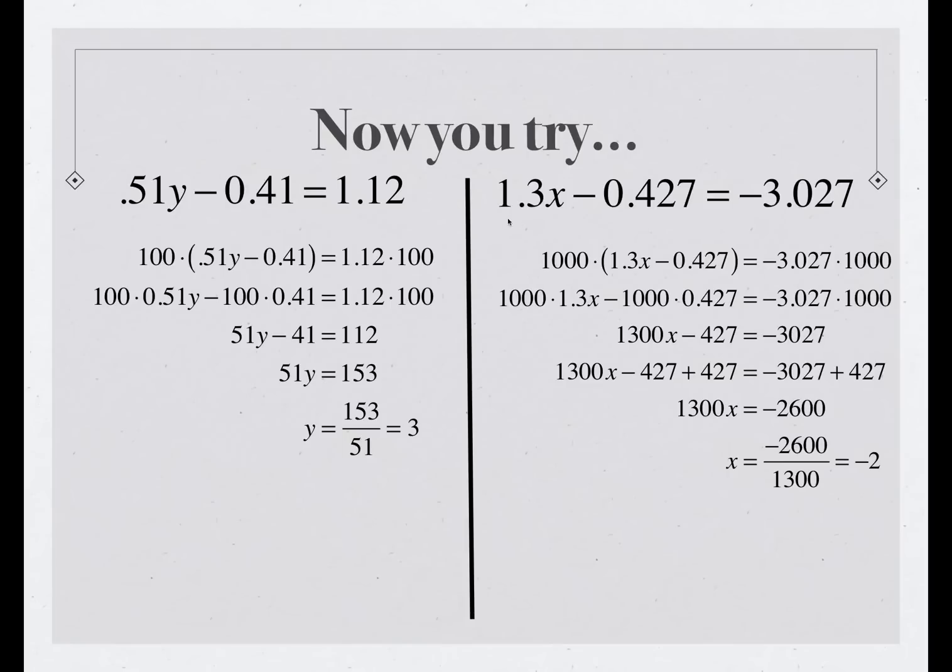On the equation on the right, we notice that the coefficient of x has one decimal place, but the other two numbers have three. So, in order to clear all three decimals, we need to multiply each side of the equation by 1,000. So, we do that in this first step, distribute, and then 1,000 times 1.3 is 1,300x, minus 1,000 times 0.427 is 427, equals -3,027, which is -3.027 times 1,000.